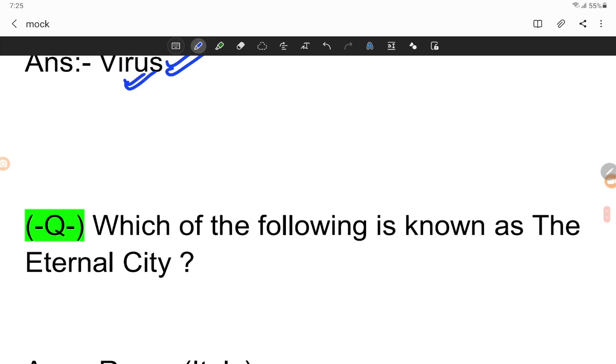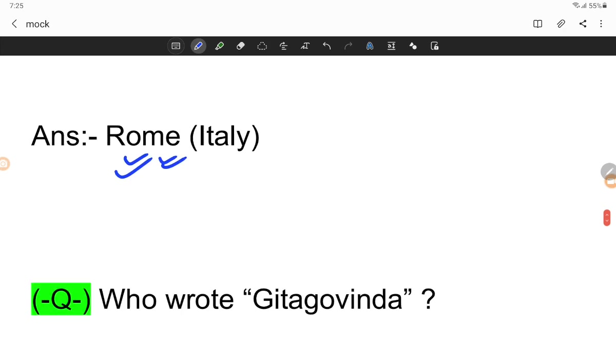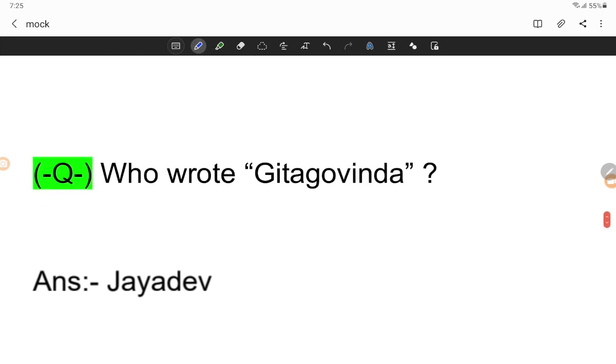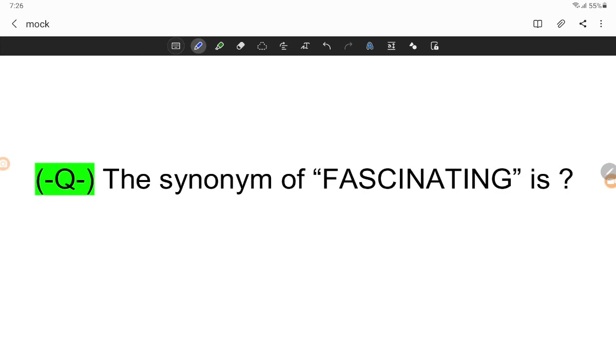Which of the following is known as the eternal city? Rome, Italy is known as the eternal city. Who wrote Gitanjali? Rabindranath Tagore.